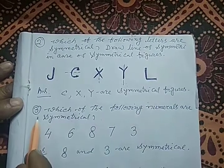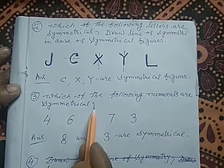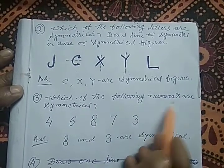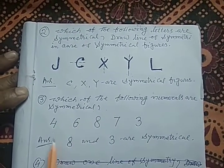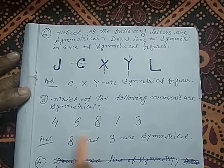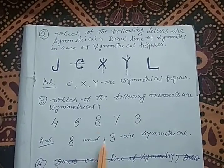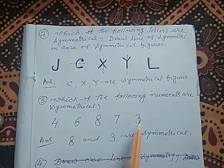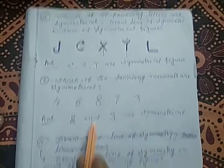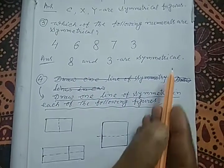In question three, which of the following numerals are symmetrical? The numerals given are 4, 6, 8, 7, and 3. Out of these, only 8 and 3 are symmetrical.